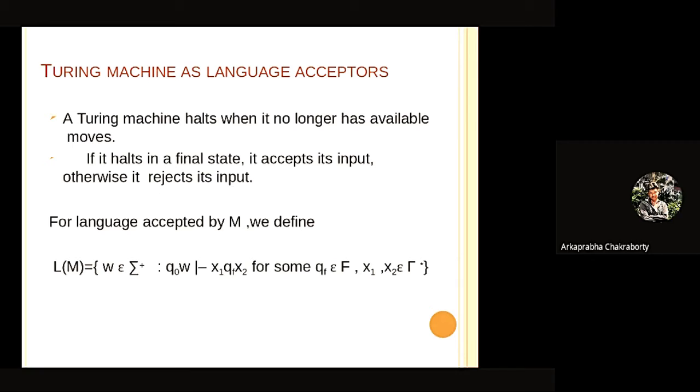It's following the program or the instruction defined in state 359. If suppose at state 359, we say that if it sees a 1, then let that 1 remain as 1, and move left and go to some other state.